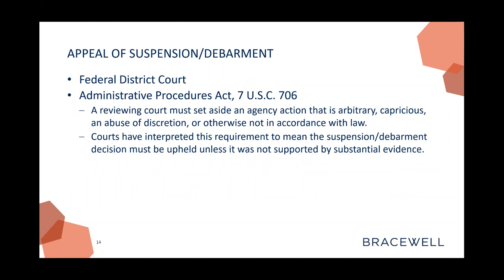There is an appeal process for suspension and debarment — it goes to federal district court, usually the D.C. district court, which is more sophisticated and used to these types of cases. The standard of review is under the Administrative Procedures Act — you have to prove the agency was acting arbitrarily and capriciously or abusing their discretion. It's a tough standard to meet. What makes it more difficult is that you can go through the whole process of appealing, come out, and the agency will just issue a corrected one. They'll learn from going to court and reissue a suspension and debarment that is correctly done. That's why you don't find a lot of appeals — all the agency has to do is go back and fix their decision if they did it incorrectly in the first place.